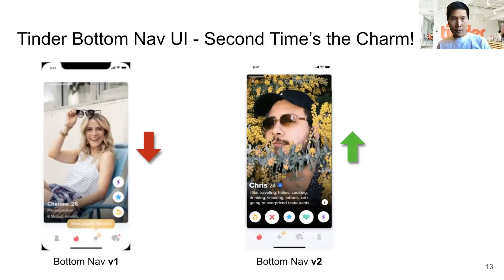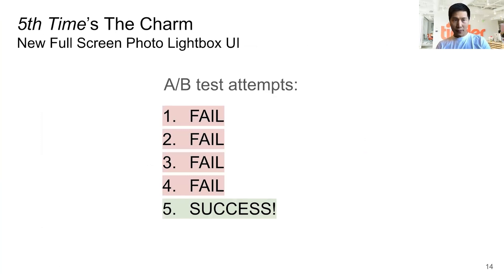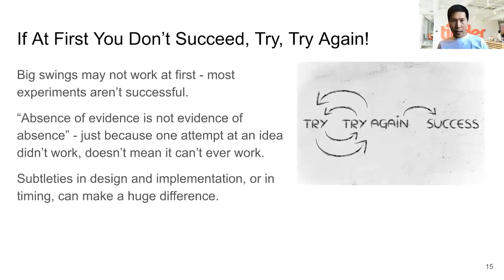Coming back to Tinder, we tested a bottom navigation UI and it took us two tries to get it right. The first attempt moved buttons around and got rid of some — that was not popular with users. Our new design on the right does seem to be working. In other companies, sometimes it takes even more: there's an example of a full-screen photo lightbox UI that took five tries to get right — the first four A/B tests didn't work, but on the fifth try it finally did.